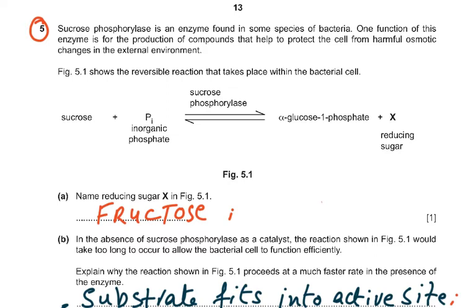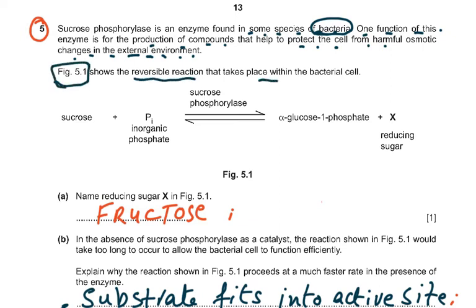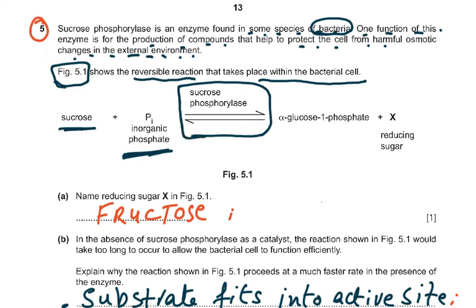Sucrose phosphorylase is an enzyme found in some species of bacteria. One function of this enzyme is the production of compounds that help to protect the cell from harmful osmotic changes in the external environment. Figure 5.1 shows the reversible reaction: sucrose plus inorganic phosphate, in the presence of sucrose phosphorylase, forms alpha glucose-1-phosphate and a compound called X. We need to identify X, which is a reducing sugar.